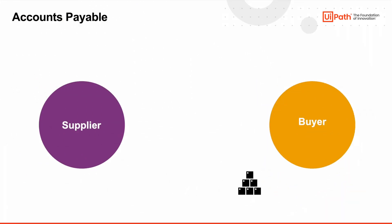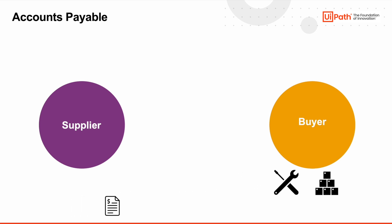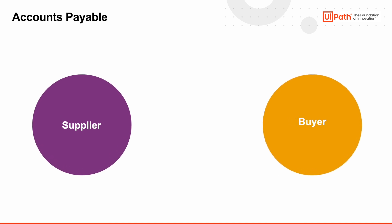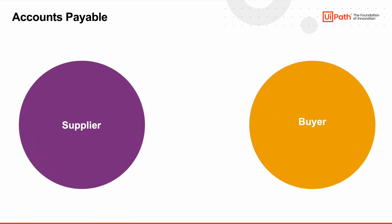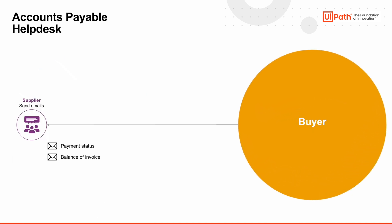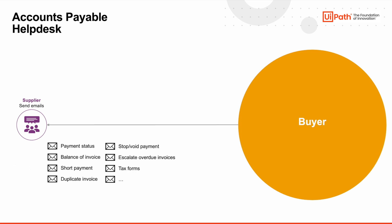A good accounts payable process assures that you can maintain a strong supplier relationship. Paying them on time and in the correct amount means that they will be eager to supply for your next needs. Communication is critical in accounts payable. Suppliers will email invoice copies or ask for the payment status of an open invoice, but they may also escalate issues, including duplicate invoices or payments short of the invoice amount.